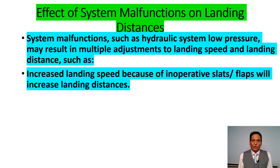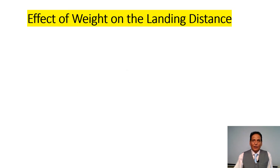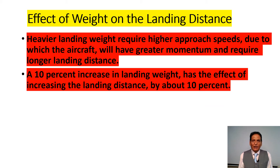Effect of system malfunction on landing distances: malfunctions such as increased landing speed due to inoperative slats or flaps will increase landing distances. Effect of weight on landing distance: heavier landing weight requires higher approach speeds, giving the aircraft greater momentum and requiring a longer landing distance. A 10% increase in landing weight has the effect of increasing the landing distance by about 10%.